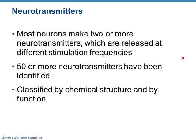Let's talk about the different types of neurotransmitters. There are at least 50 or more that have been identified. Most neurons make at least two. Some are inhibitory, some are stimulatory, but they're all classified by what they look like — their chemical structure — and by what they do: are they excitatory or inhibitory? We're going to go through about 15 of the common ones, including some commonly associated with mood, anxiety, and depression.